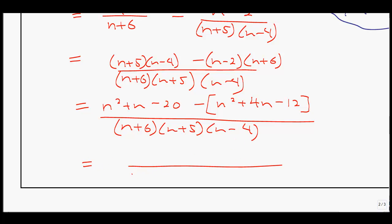Now we can gather our like terms in the numerator. What do we have? We have n squared. Notice that this negative would be fed in here using the distributive property. n squared minus n squared, those are gone. And n minus 4n gives you negative 3n. And a negative 20 minus negative 12 gives you a minus 8 as your final solution.